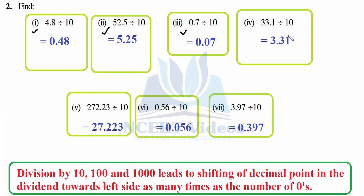Writing 331 first, then only 10 — that is one displacement towards the left hand side. Initially we were here, so the answer is 3.31. Write 27223 as it is, then only one shifting again. In all these questions we are doing one shifting because we are dividing by 10. So initially we were here, one shift makes the answer 27.223.